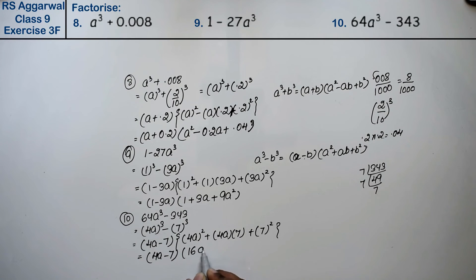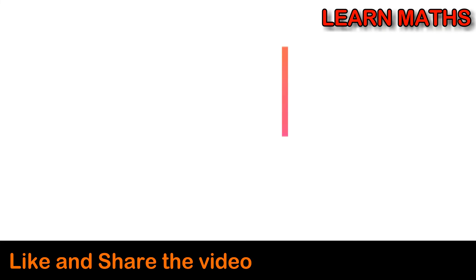That is (4a minus 7)(16a² plus 28a plus 49). That is the answer. Thank you.